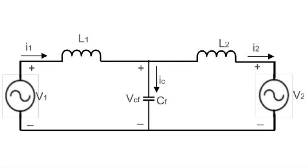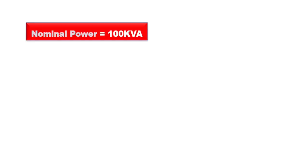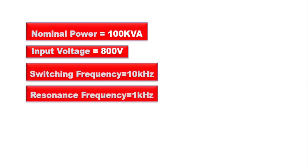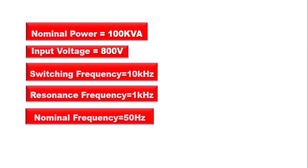In an inverter that is rated as 100 kVA with the other parameters being input voltage 800 volts DC, switching frequency 10 kilohertz, resonance frequency 1 kilohertz, and the nominal frequency is 50 hertz.